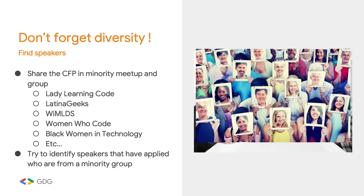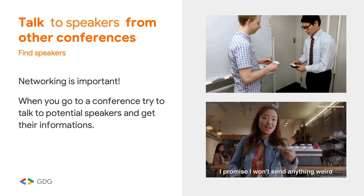Don't forget about diversity. It's important to share your call for papers in groups you would not usually reach. Bringing diversity means bringing people who are not like you — try to find those places and reach speakers who don't usually apply to your event. A good way to find speakers is to go to conferences, find speakers there, share information, sell your event, and say you want them to come. Business cards are always useful for that.